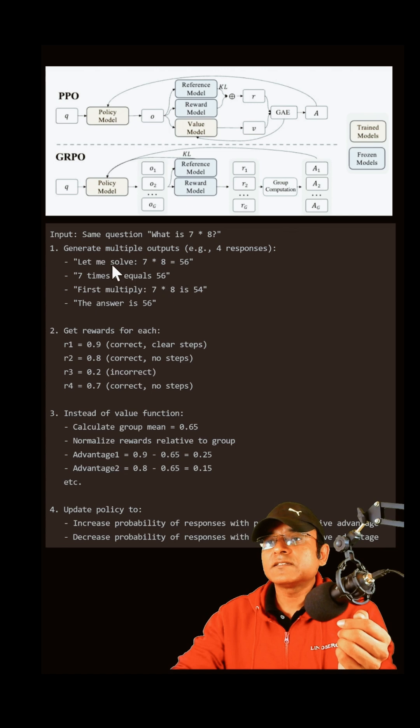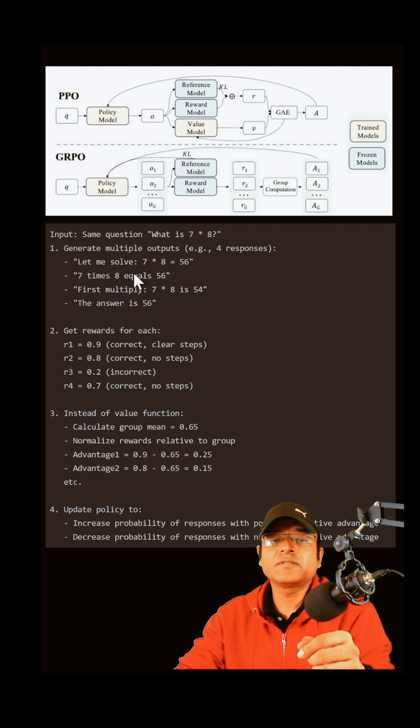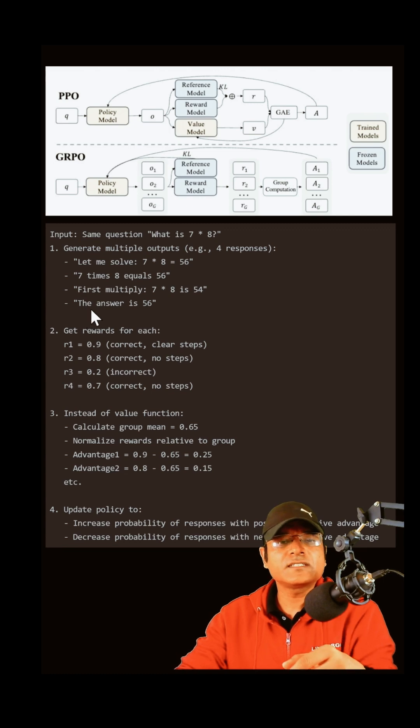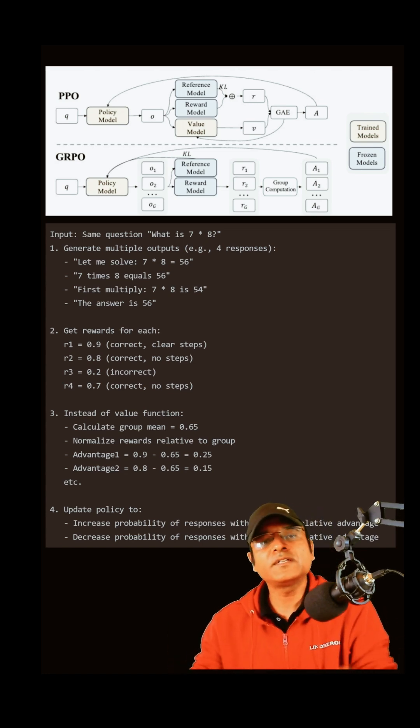For example, take a simple question: what is 7 multiply by 8? Generate multiple outputs. Suppose we have 4 solutions - one step got the answer, another without steps got the wrong answer, another got the answer without steps. From this we get rewards based on what is correct and what has clear steps. Then we do group computation, which may be median or some other way to compute the advantage. What has positive relative advantage will increase in probability, and what has negative relative advantage will decrease in probability. That's how it gets trained - that's GRPO in simple terms.